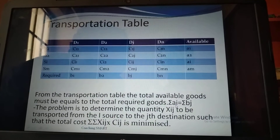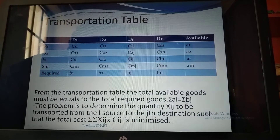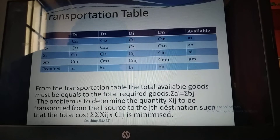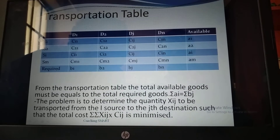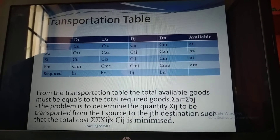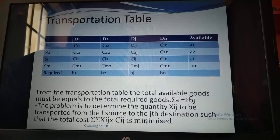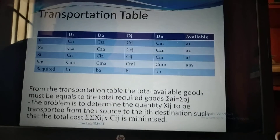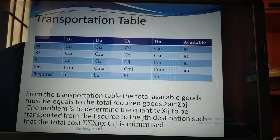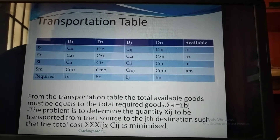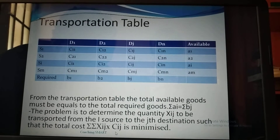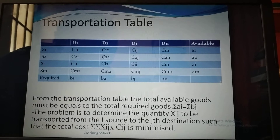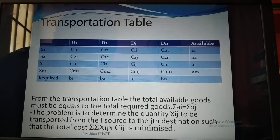The sum of Ai must equal the sum of Bj. The problem is to determine the quantity Xij to be transported from the i-th source to the j-th destination, such that the total cost — the summation of Xij times the cost Cij per unit — is minimized.